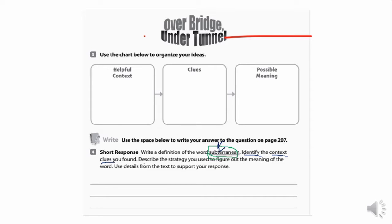They want us to use another color. We need to describe the strategy that we use to figure out the meaning of the word, and then we need to support it with details from the text. The authors have presented us with a chart to help us sort out and organize our thinking.